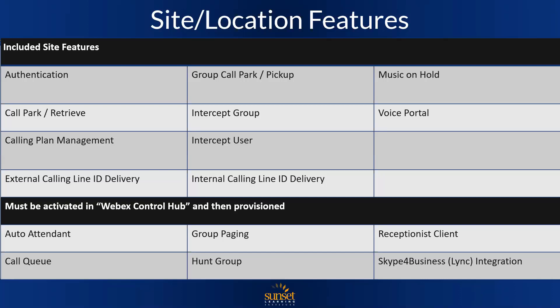There are additional features that must be activated in Webex Control Hub and then provisioned. Things like an auto attendant — on an on-prem solution you'd need a separate application like UCCX, UCCE, or Unity Connection, but with Webex Calling it's included. Just activate it and provision the feature. There's also native call queuing for hunting purposes, paging and receptionist functionality, and Skype for Business and Link integration. You just need to activate these in Control Hub.